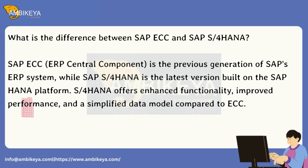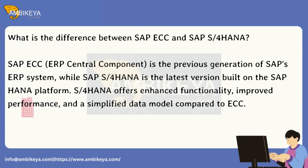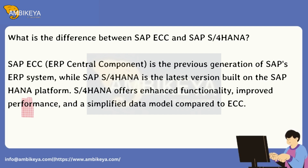What is the difference between SAP ECC and SAP S4HANA? SAP ECC, ERP Central Component, is the previous generation of SAP's ERP system, while SAP S4HANA is the latest version built on the SAP HANA platform. SAP S4HANA offers enhanced functionality, improved performance, and a simplified data model compared to ECC.